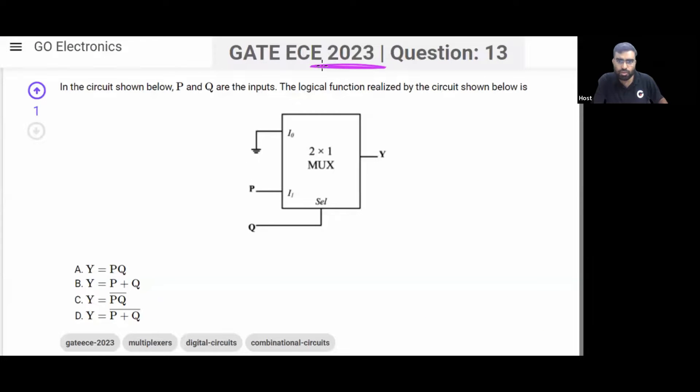This is GATE Electronics 2023 question. In the circuit shown below, this 2 by 1 multiplexer is given to you. On the select line, this variable Q is applied. You can see this variable Q is connected to the select line. P comma Q, these are the inputs.